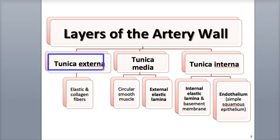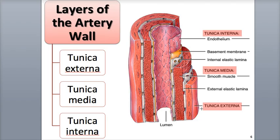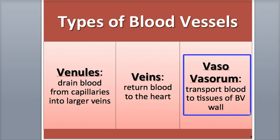The tunica externa, or adventitia, is the outermost layer of the blood vessel wall. It consists of protein fibers, including collagen and elastic fibers, that protect the blood vessel but also help anchor it to neighboring tissues. The tunica externa also contains nerves, and in large vessels, its own network of small blood vessels called the vaso-vasorum.